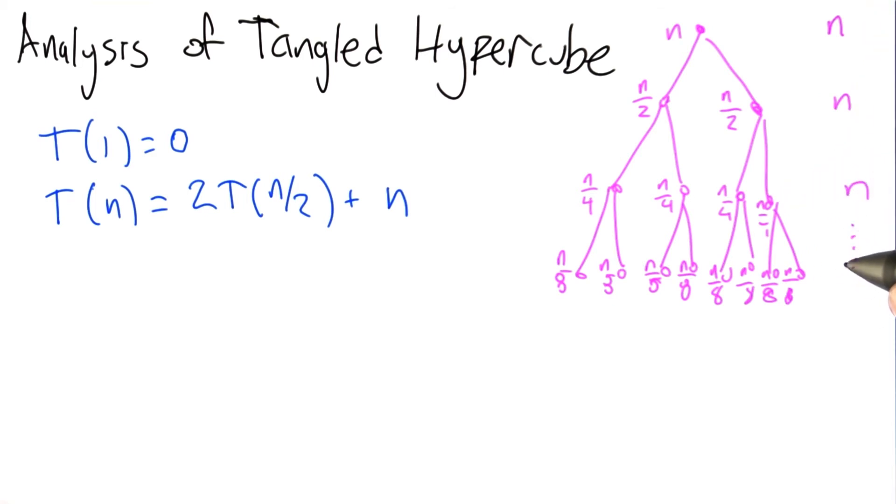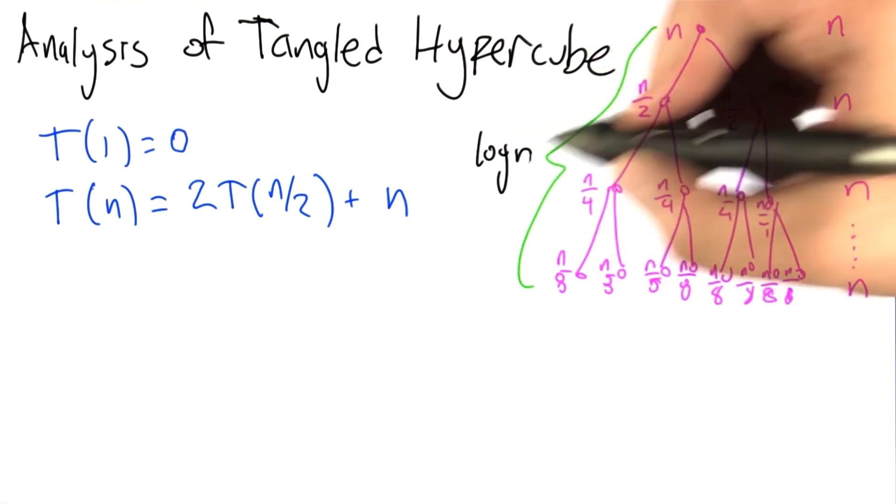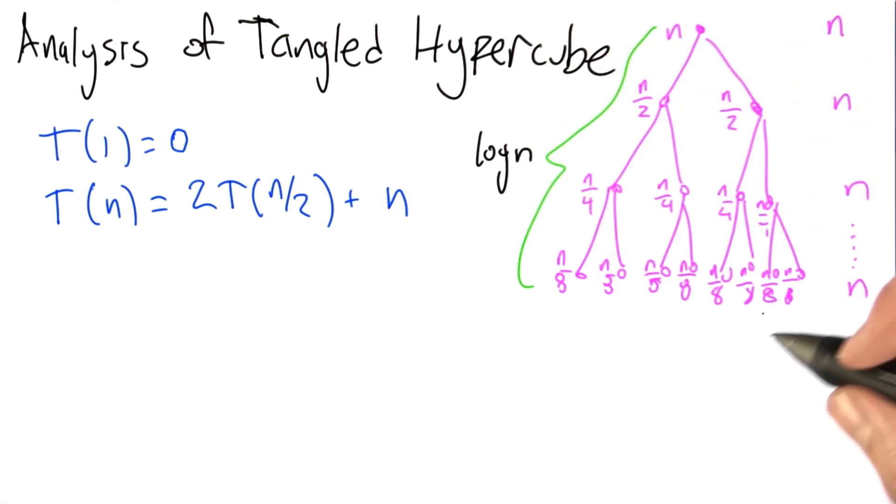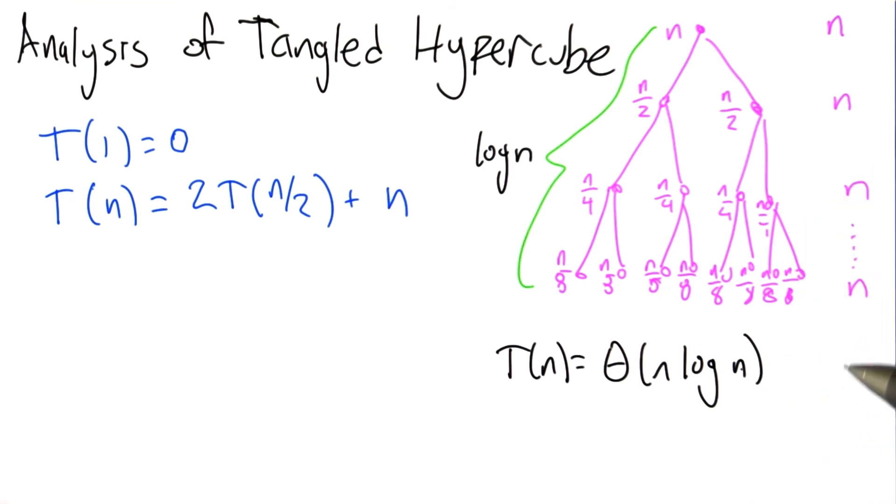I don't know if you can see what's going to happen here, but we get n edge contributions at each of these levels. You may recall that there are log n levels to this tree. At the end of the day, the total number of edges that are created is n times the logarithm of n, or n log n.